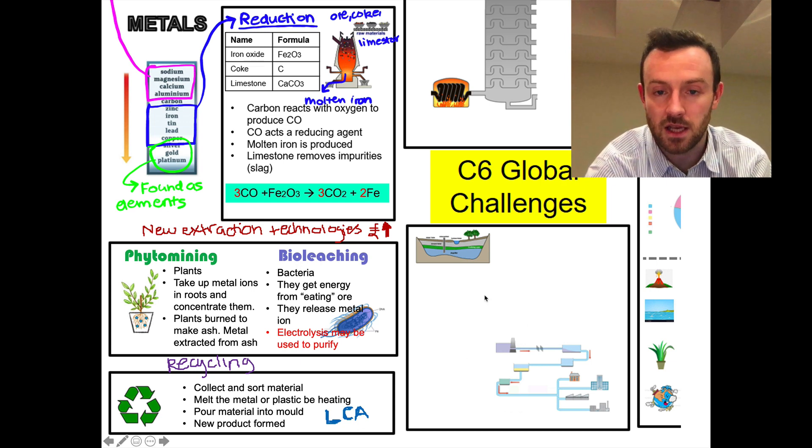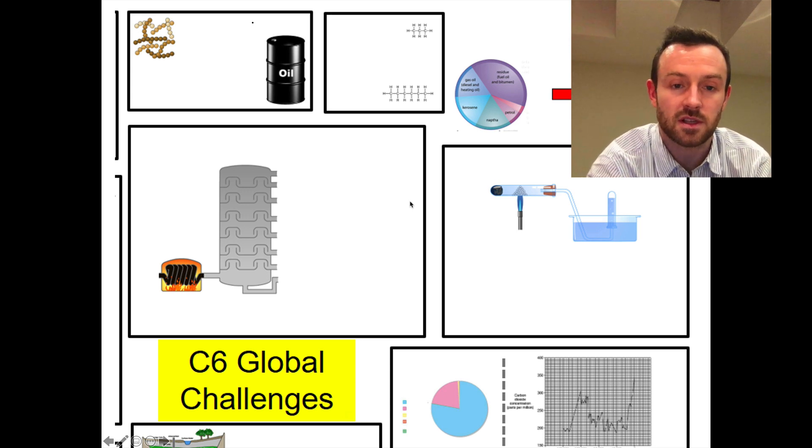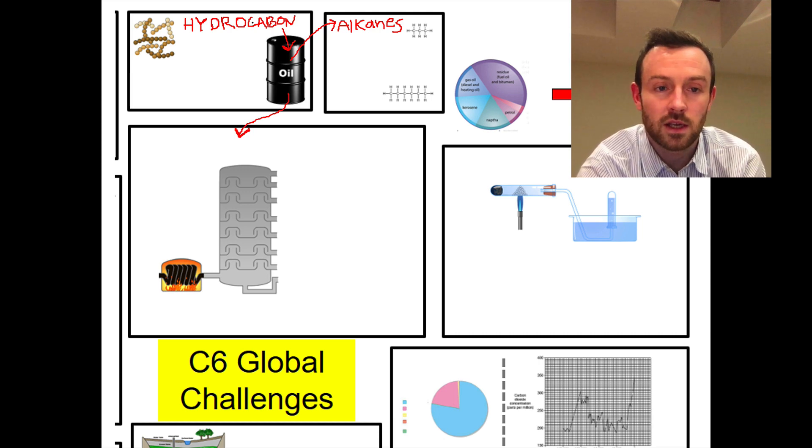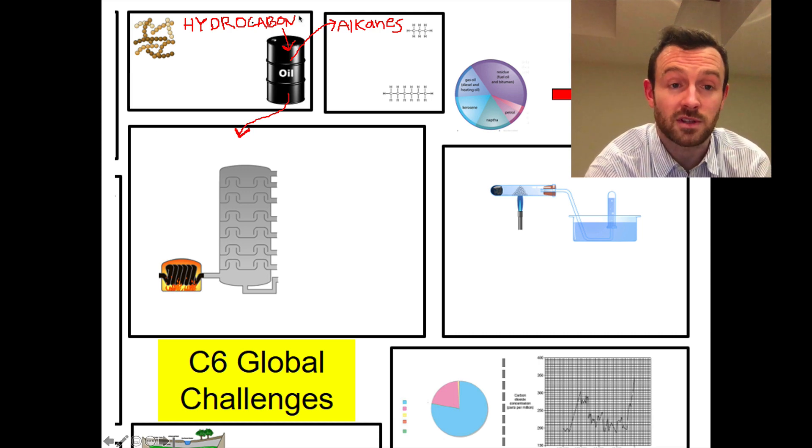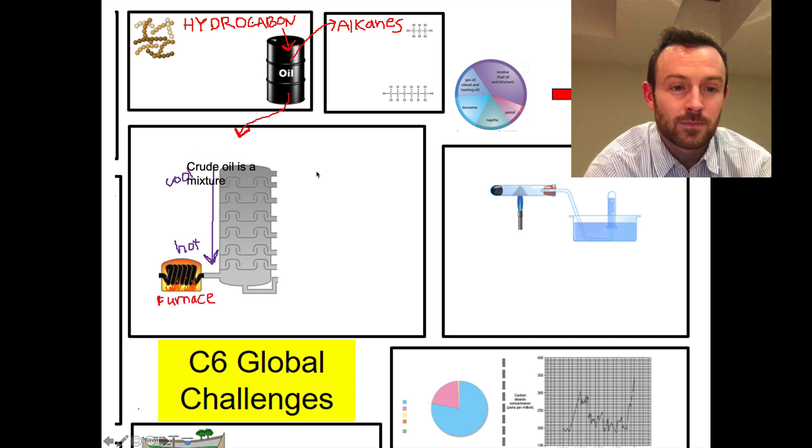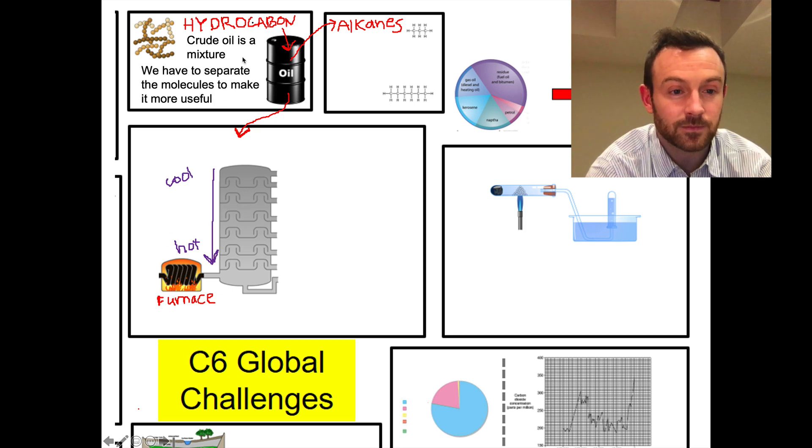The other global challenge that we're going to look at is oil and hydrocarbons. So now we're moving up into this top right part of the sheet. Oil is a mixture of hydrocarbons - and I do realize I've forgotten an R right here, so this should be hydrocarbon. Oil is a mixture of hydrocarbons, mainly those hydrocarbons are alkanes. And because it's a mixture, we need to separate them by something called fractional distillation, which we'll look at here.